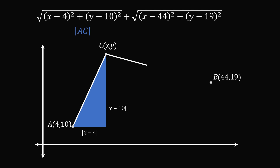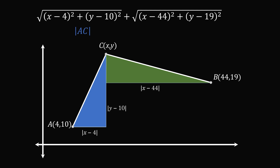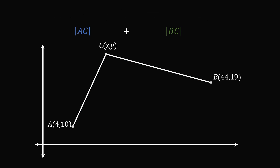We can then construct CB, and we will have a similar phenomenon, where the second square root is exactly the length of BC. Thus, the sum of the square roots is exactly equal to the length of AC plus the length of BC. We now want to minimize the sum of these distances. We've transformed an algebra question into a geometry question.